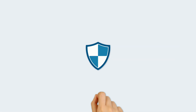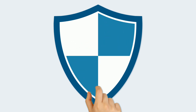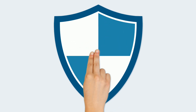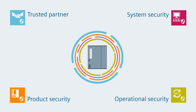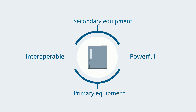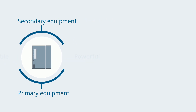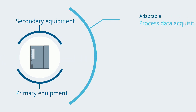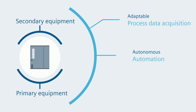Such complex structures require a maximum of security. For that reason, the comprehensive C-Protek 5 cyber security package is also an integral component of every C-Protek 6MU85 merging unit. In a nutshell, the C-Protek 6MU85 merging unit is the interoperable and powerful solution between primary equipment and secondary equipment — for adaptable process data acquisition, autonomous automation, and secure communication.